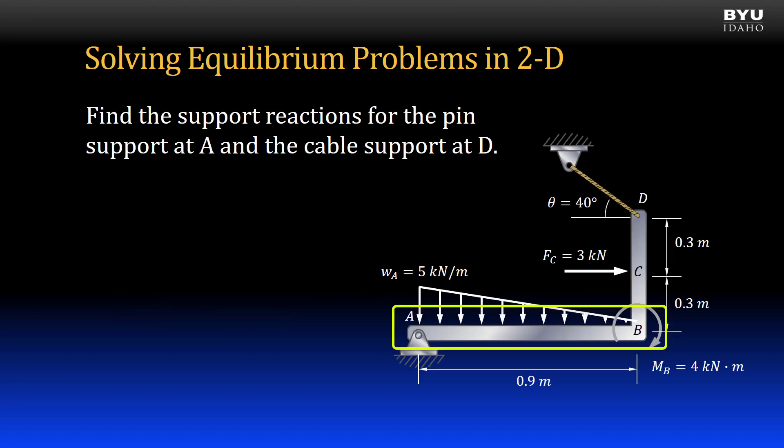We have a member consisting of horizontal element AB and vertical element BCD. There is an applied triangular distributed load from A to B with a maximum value of 5 kN per meter at point A.